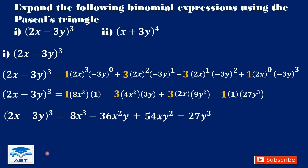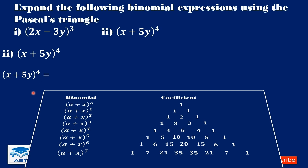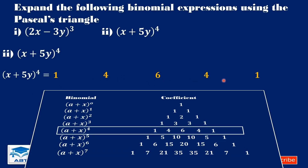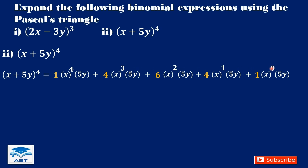Now let's expand the second question. The exponent is 4, and for a binomial with an exponent of 4, the coefficients are 1, 4, 6, 4, 1. So we multiply each coefficient by x, and again multiply each coefficient by 5y, then connect them with addition signs. We give x an exponent of 4, reducing to 3, 2, 1, and 0. And we give 5y an exponent of 4, reducing to 3, 2, 1, and 0.